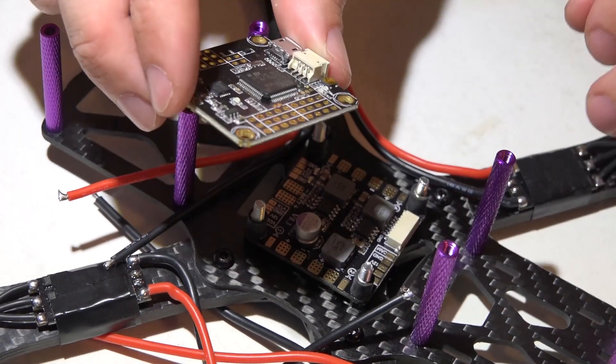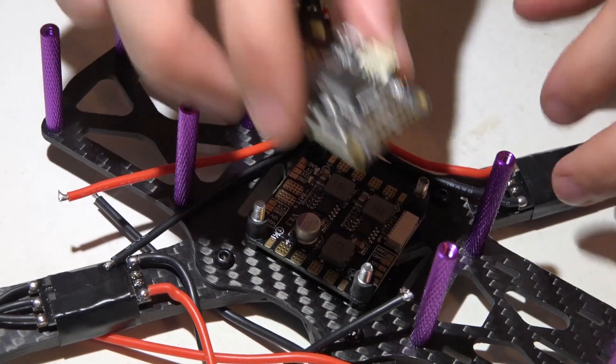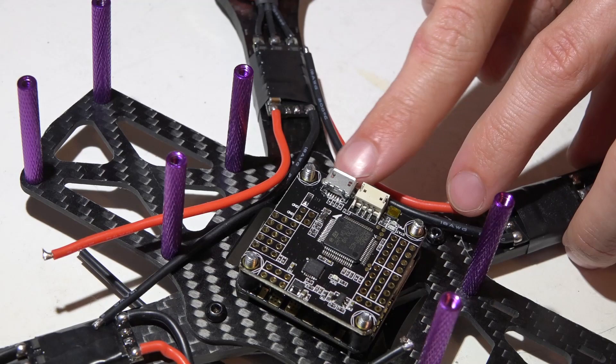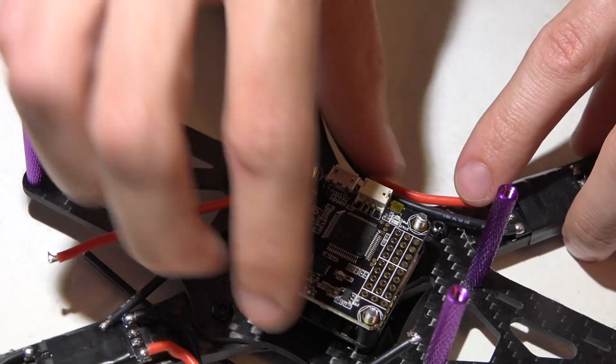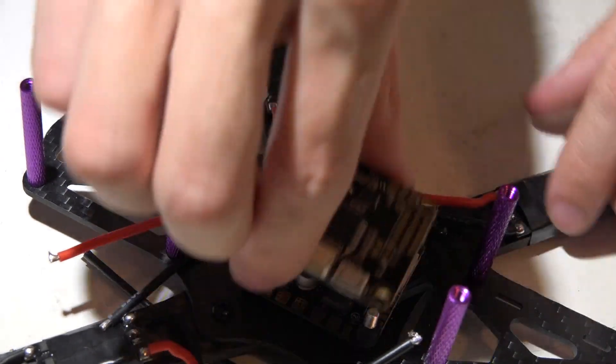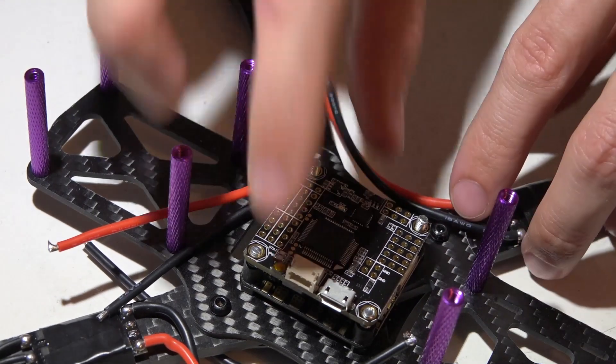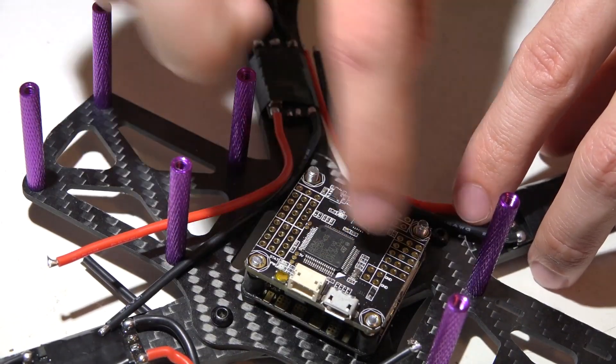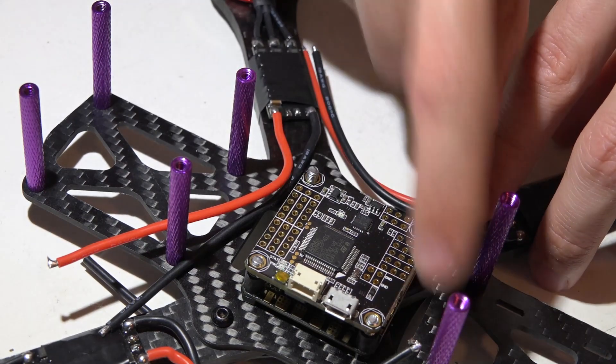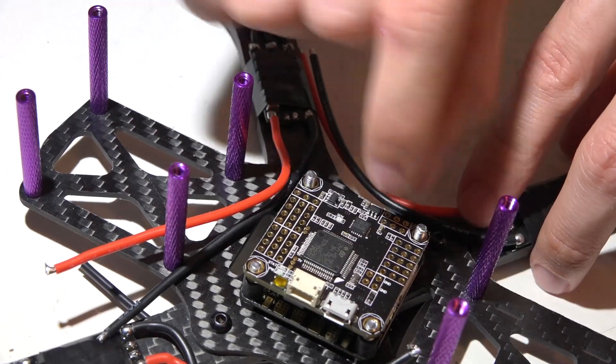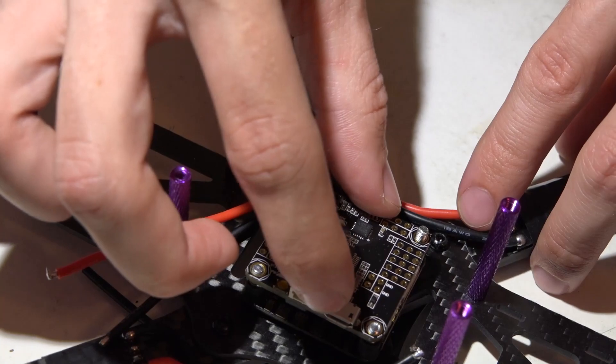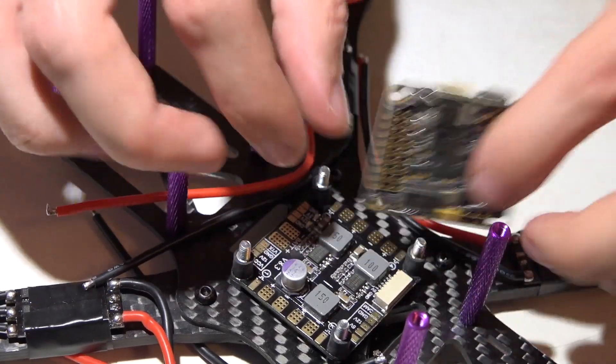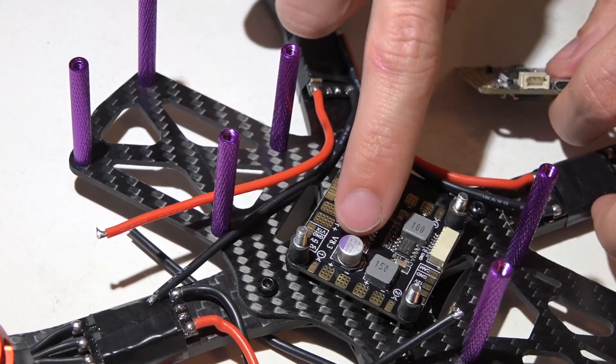Mount your flight controller in whatever way is best for you. So things I take into consideration, I want easy access to my USB. So my choices are going to be like this or like this. Because I usually mount my receivers right on top of the flight controllers, I usually want my receiver pins being towards the front. That way I can keep my receiver wires nice and short. So I could do it like this. The only problem though is this voltage regulator is coming in contact with this thing sticking up right here.